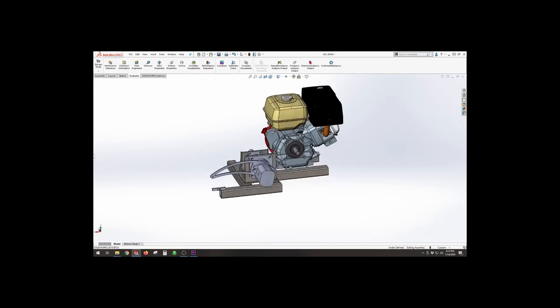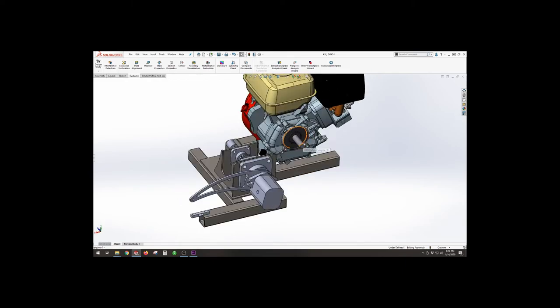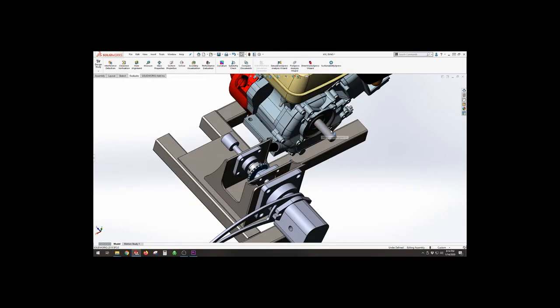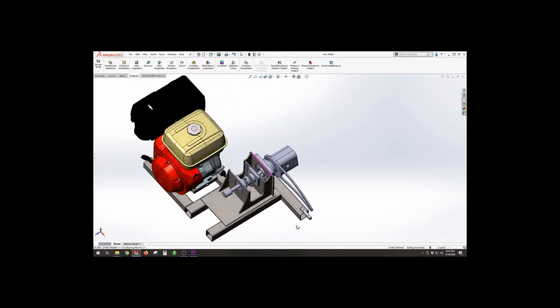Starting with the component breakdown, you've got the mainframe. Here's my engine. The shaft is going to spin in a counterclockwise direction, spinning my input sprocket to my pump shaft. So this is going to start spinning around, which is going to turn my pump in a clockwise direction.